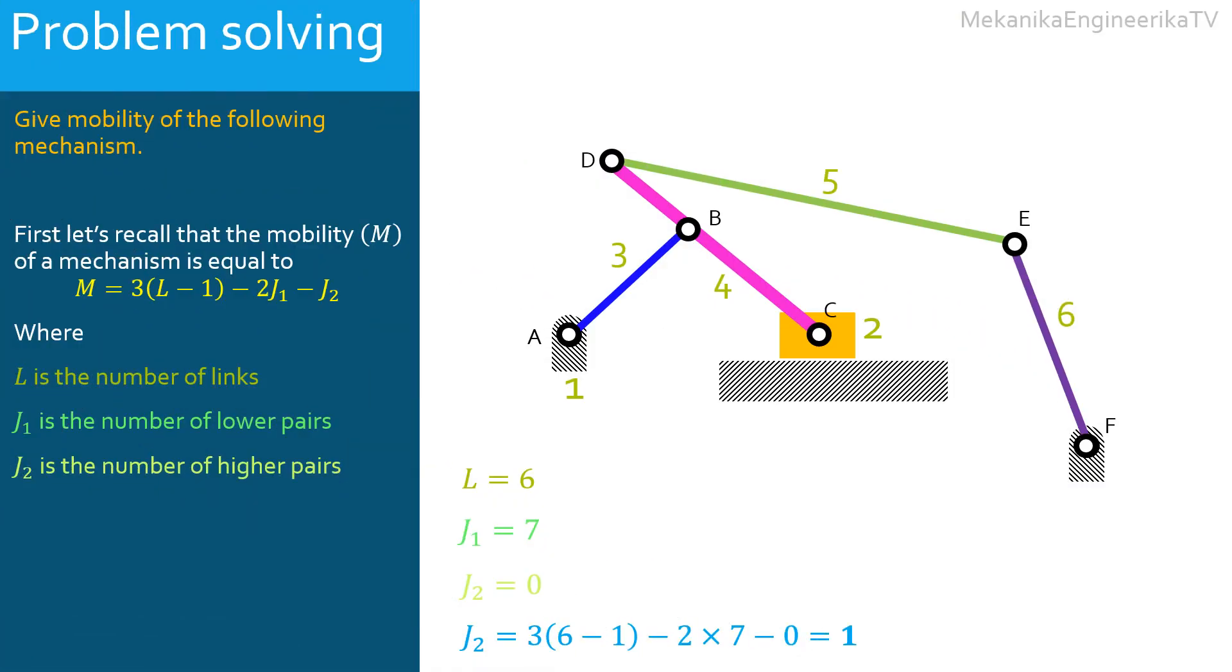It is expected here that the mobility should be equal to 1. Actually this mechanism is built of a combination of a slider crank mechanism and a 4-bar mechanism.